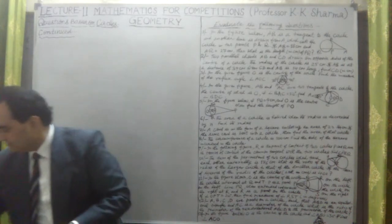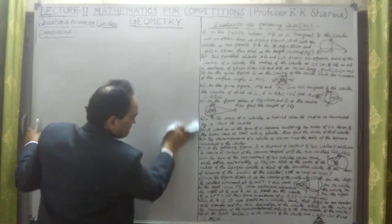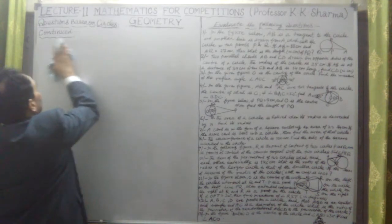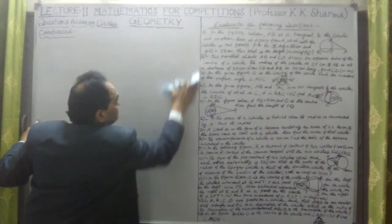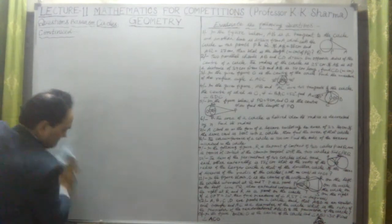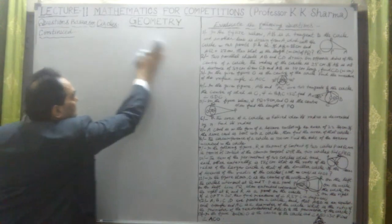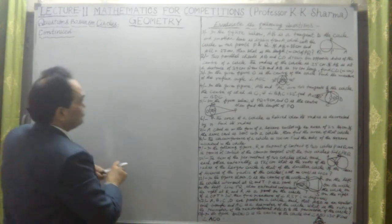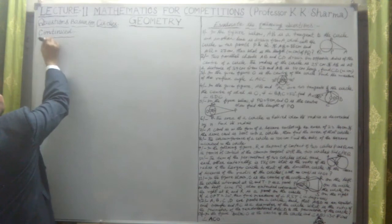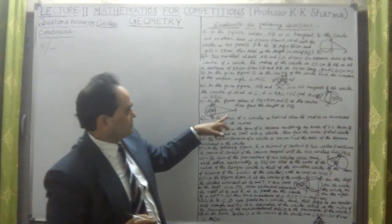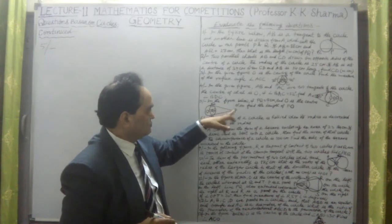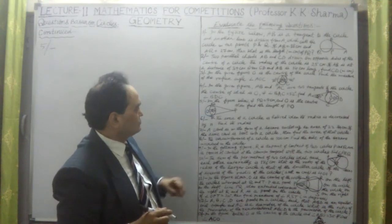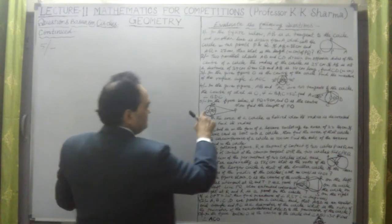Question number 5: The question says that in the figure, if PQ is 9 centimeters and O is the center, then find the length of PO — that is, the distance from the external point P to the center O.